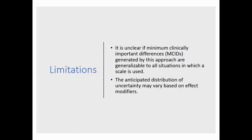Regarding limitations: these are specific examples using scales of cognition in people with cognitive impairment and dementia, so they may not generalize to all situations. The distribution of uncertainty can be influenced by many factors, which is why it's better to pool across many studies to get a better sense of what's happening in the literature. Of course, your results could still be influenced by the populations being included.